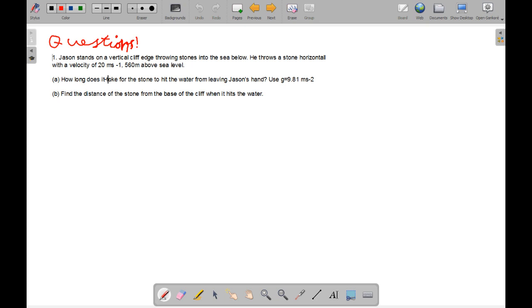So, Jason stands on a vertical cliff edge throwing stones into the sea below. He throws a stone horizontally with a vertical velocity of 20 ms minus 1, and it's 560 meters above sea level. How long does it take for the stone to hit the water from leaving Jason's hand? Use g equals 9.81. Find the distance of the stone from the base of the cliff when it hits the water. So, I'll give you a 5 second pause, pause the video, and have a go.